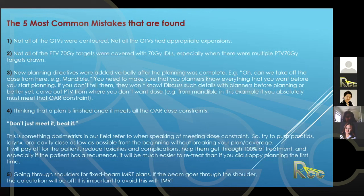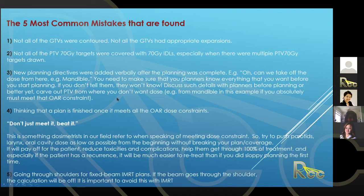Second mistake: not all PTV 70 targets were covered with the 70 Gy isodose line. I've worked at places where physicians draw multiple PTV 70 volumes, and it's the treatment planner's job to make sure they've optimized on all of those volumes. It could be a planner oversight — a target may be within a 5940 volume but not within the 70 Gy isodose line as intended.